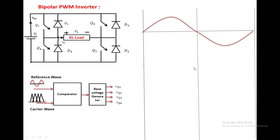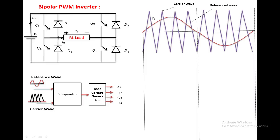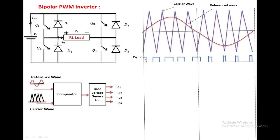Here we have taken one cycle of the reference wave, and the triangular wave as the carrier wave. The comparison is done between them. Whenever the reference wave is greater than the carrier wave, the base voltage is applied to Q1 and Q2. If the carrier wave is greater than the reference wave, the base voltage is applied to Q3 and Q4. From 0 to a certain instant, the reference wave has higher magnitude than the carrier wave, so the base voltage is applied to Q1 and Q2. In this manner, the base voltage is generated for Q1 and Q2.